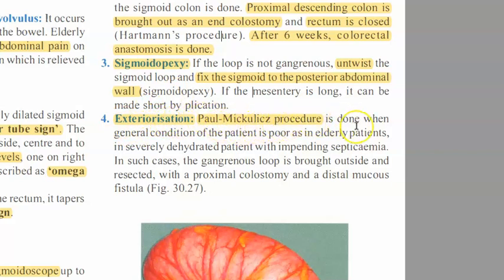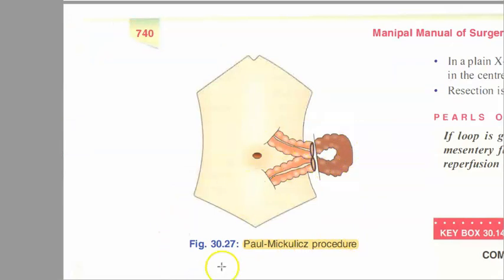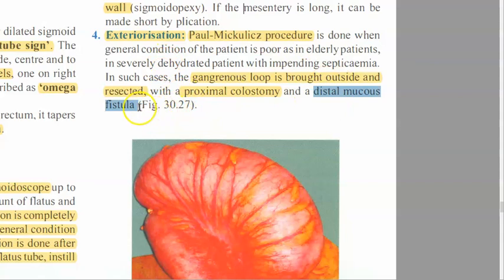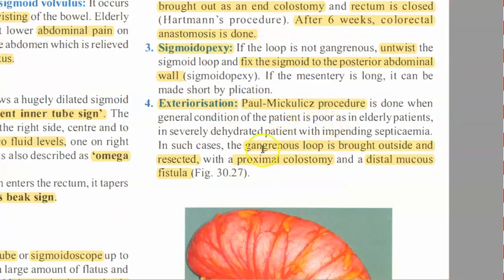Exteriorization - this is the Paul-Mikulicz procedure. Looking at the photo, you can see two cuts in the abdominal wall with the bowel brought out on both sides. This is done when the patient's condition is poor - severely dehydrated with impending septicemia. The gangrenous loop is brought outside and resected, with a proximal colostomy and a distal mucous fistula. The gangrenous loop is brought outside, resected, proximal colostomy is done, and a distal mucous fistula is created.